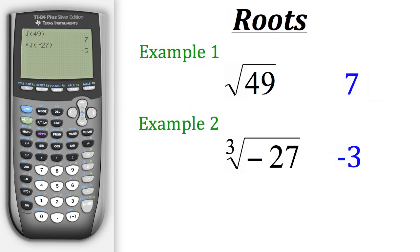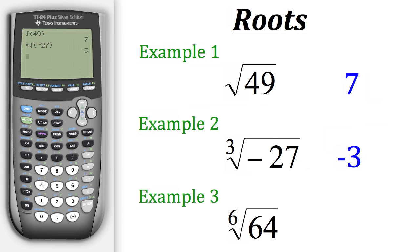Now what if we need to use another root — say a 5th, 6th, or 10th root? Well, we'll see with this next example. So here with example 3, we need to find out what the sixth root of 64 is. Well, if we go to Math, the fifth option down here has an x before the square root symbol. What that means is we could put in whatever number we want and it'll evaluate that root.